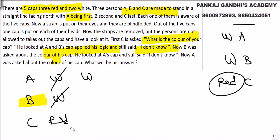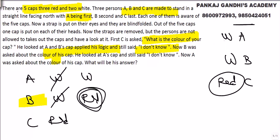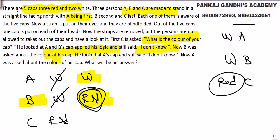B reasons: both A and B's caps are not white. Now, if A's cap were white, B would say his own cap is red — because both cannot be white and C already didn't answer. But B said 'I do not know,' which means A's cap is also not white.